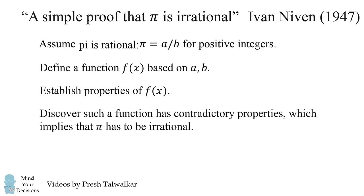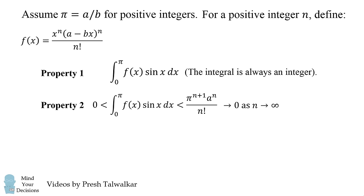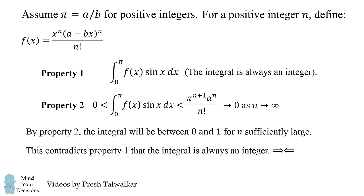Now just to go in a little more detail, first Niven defines a family of functions f(x) as follows. He then establishes one property that this integral will always be an integer. Then he establishes that this integral is actually wedged between 0 and this ratio, which will tend to 0 as n goes to infinity. So what does this mean? Well, property 2 shows the integral will be between 0 and 1 for n sufficiently large. And that contradicts property 1 that the integral always has to be an integer. And that will be the contradiction that then leads to the conclusion pi is irrational.